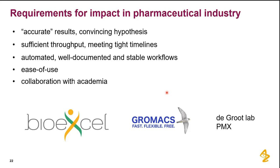That has changed a lot in recent years — because of successful project impact, people consider MD simulation a more trustworthy technique than five or ten years ago. We also need sufficient throughput. The DMTA cycle iterations have become very fast, and projects change their goalposts a lot. If it takes weeks to answer a question, the question might not be relevant anymore. If I had to balance accuracy and throughput, I'd often side with throughput.